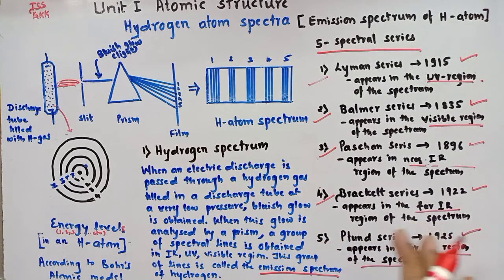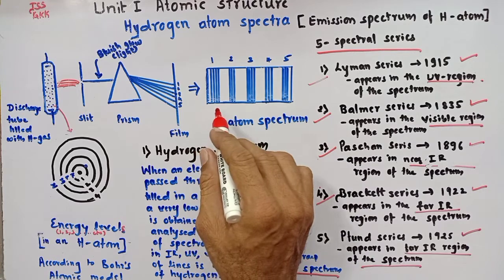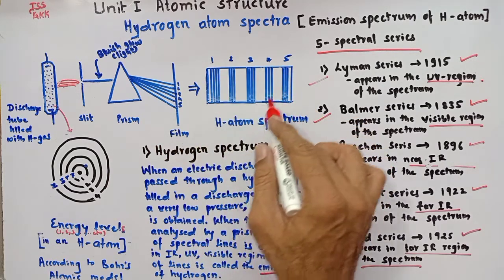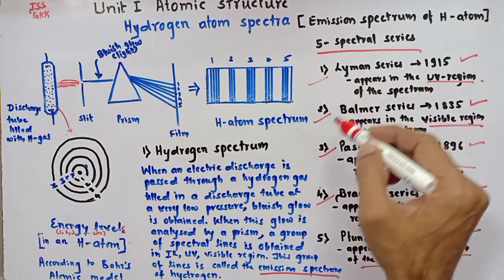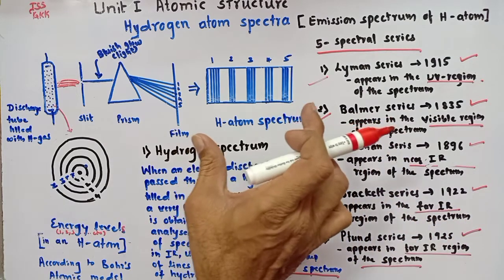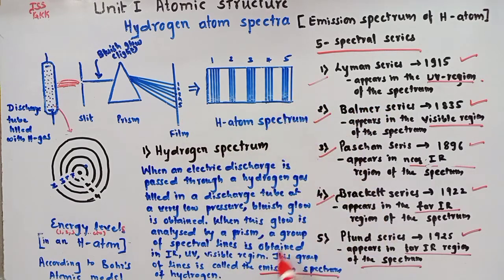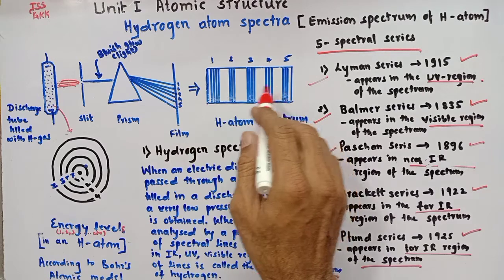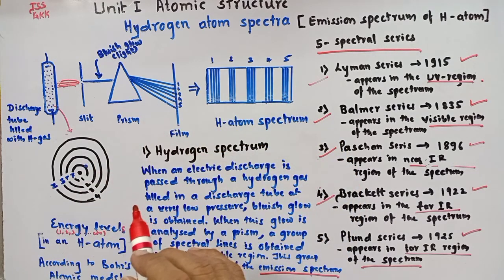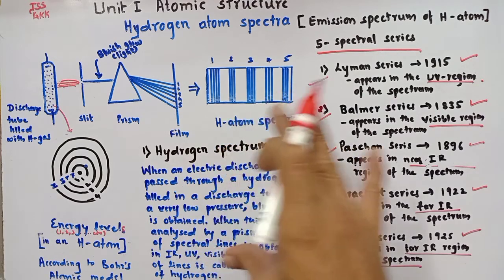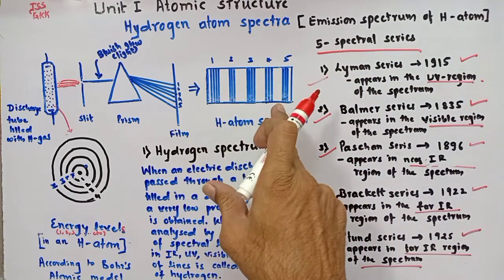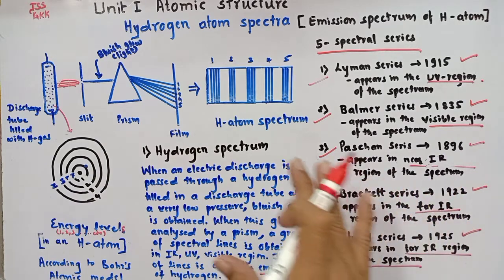According to experimental observation, the emission spectrum of hydrogen atom consists of a large number of spectral lines. Even though hydrogen atom consists of only one electron, it shows a large number of spectral lines, and these can be grouped into five spectral series: Lyman, Balmer, Paschen, Brackett, and Pfund series. The question is: why does the emission spectrum of hydrogen atom show a large number of discrete spectral lines even though hydrogen atom has only one electron? This fact can be explained on the basis of Bohr's atomic model, and we will see this in the next video.